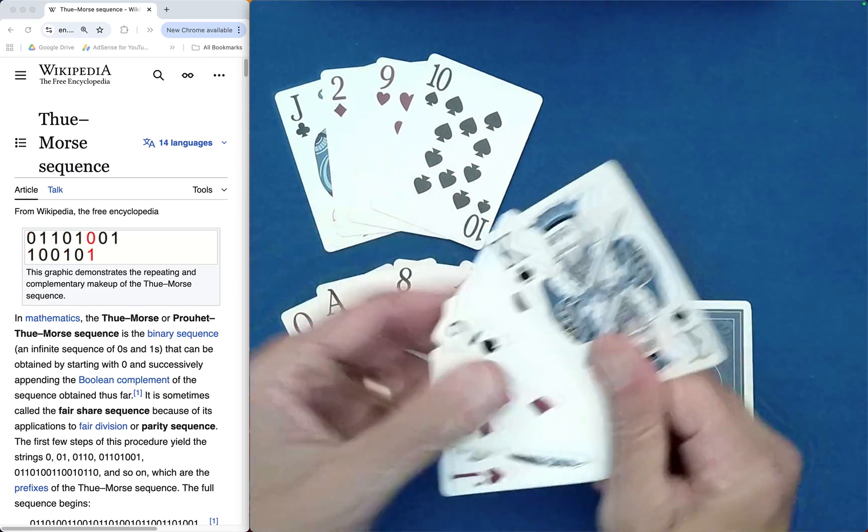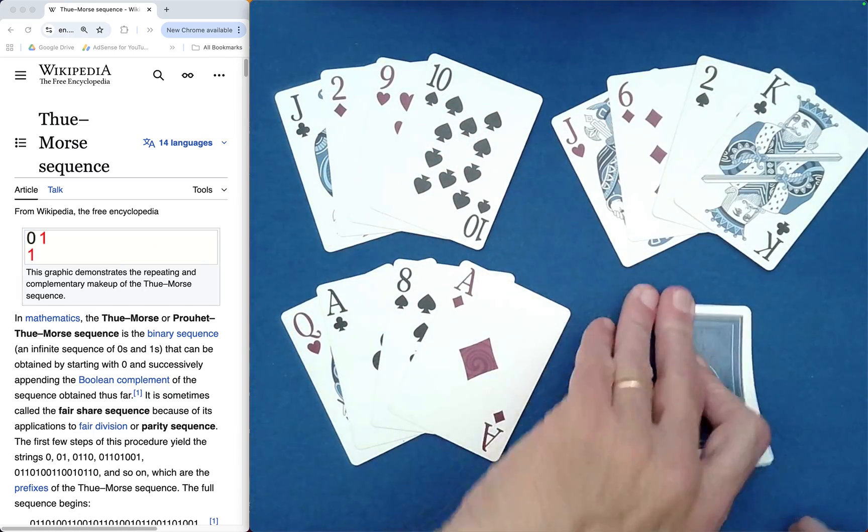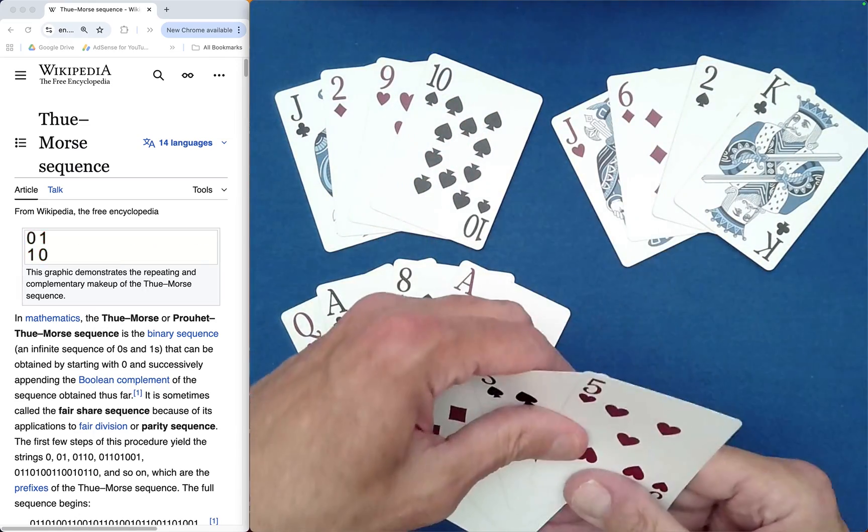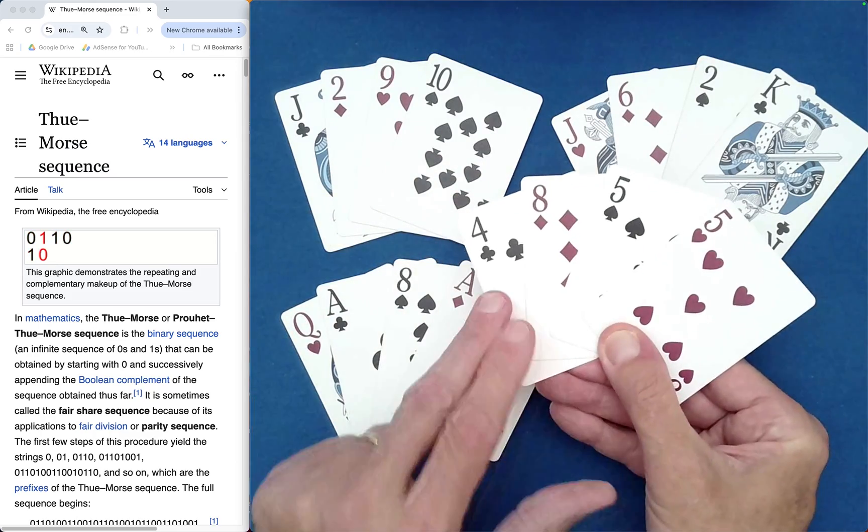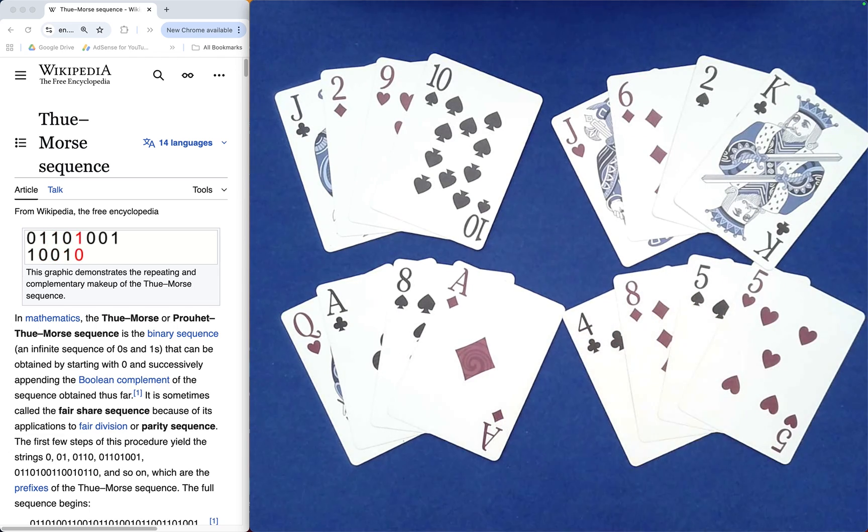Spectator 2, club, heart, spade, diamond. It's looking very, very good in the sense of fairness. Club, heart, spade, diamond. We nailed it.